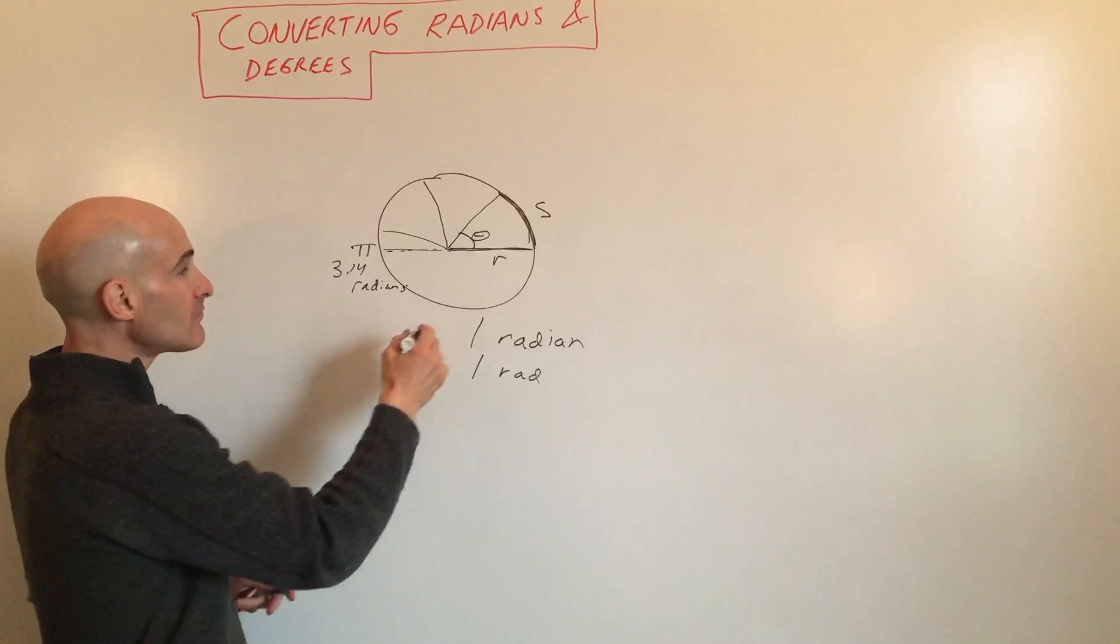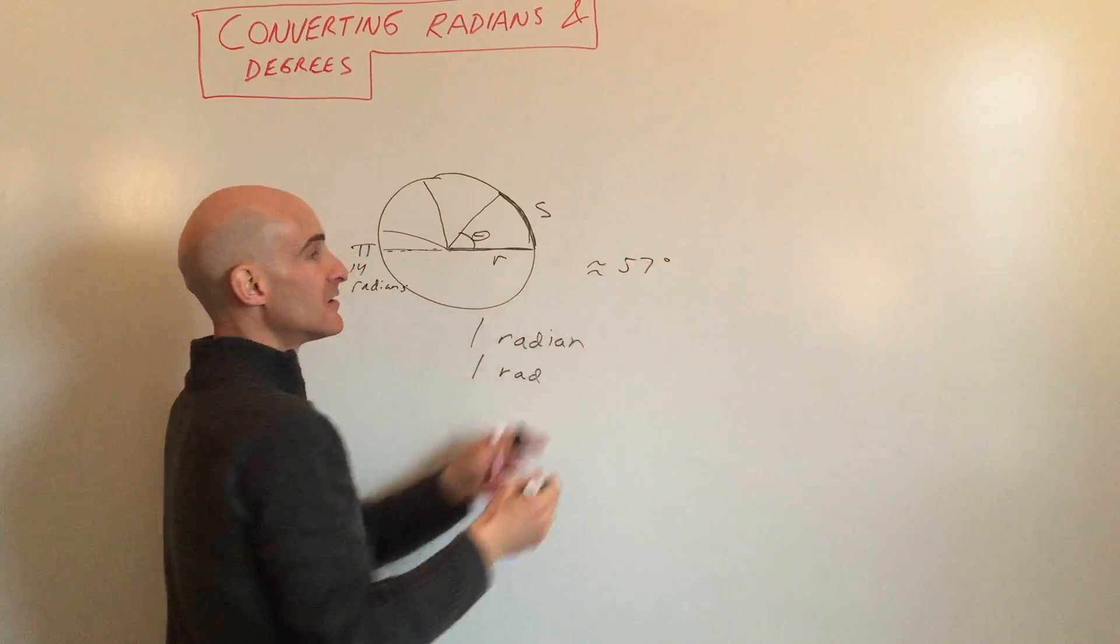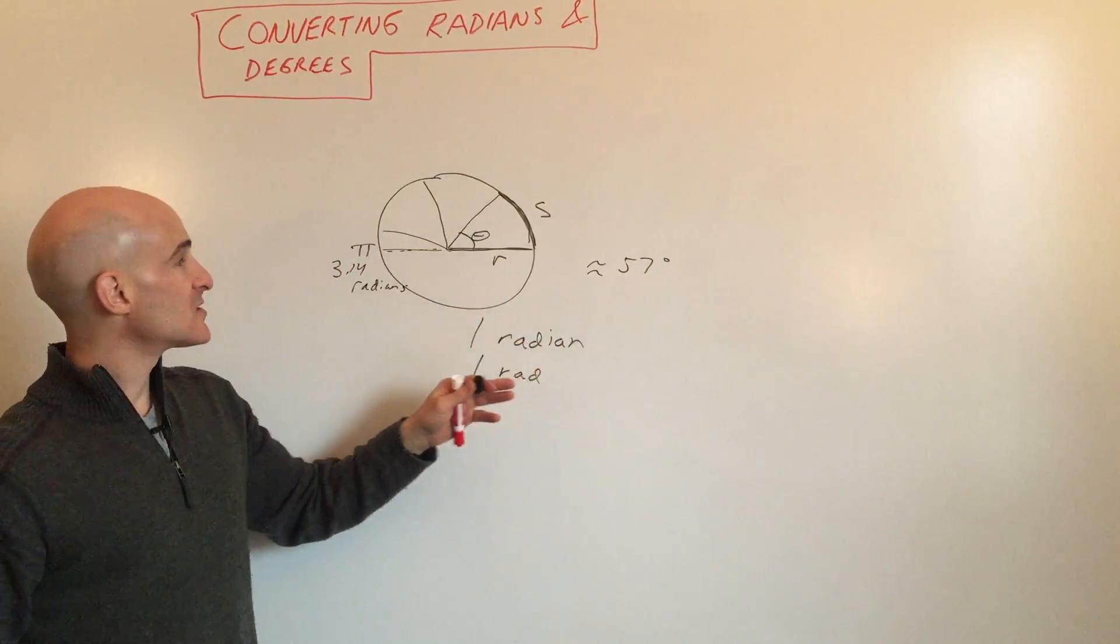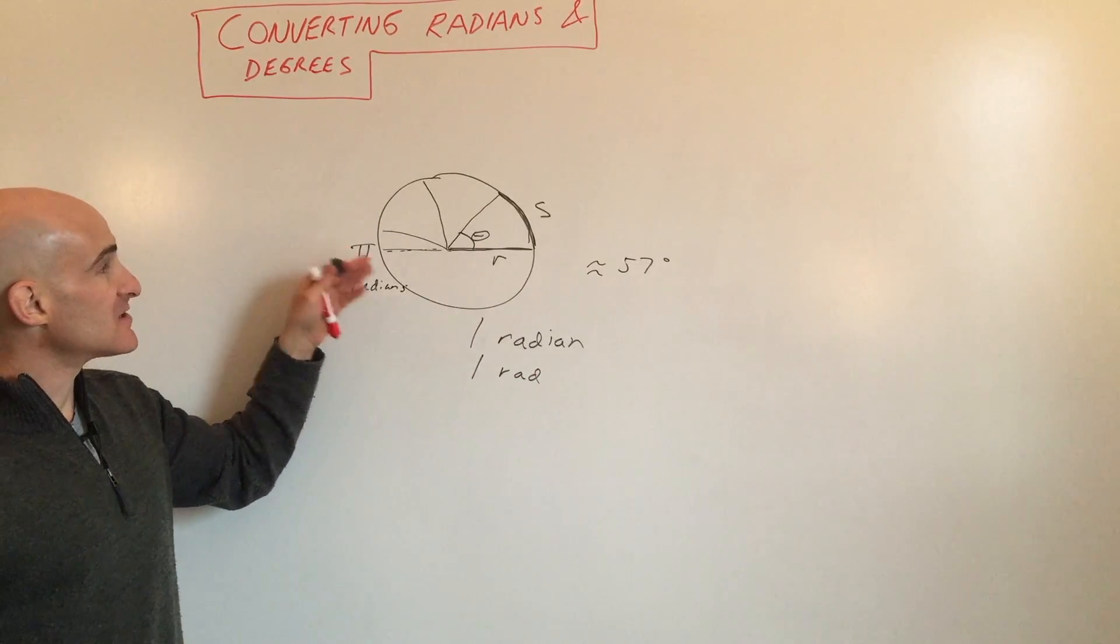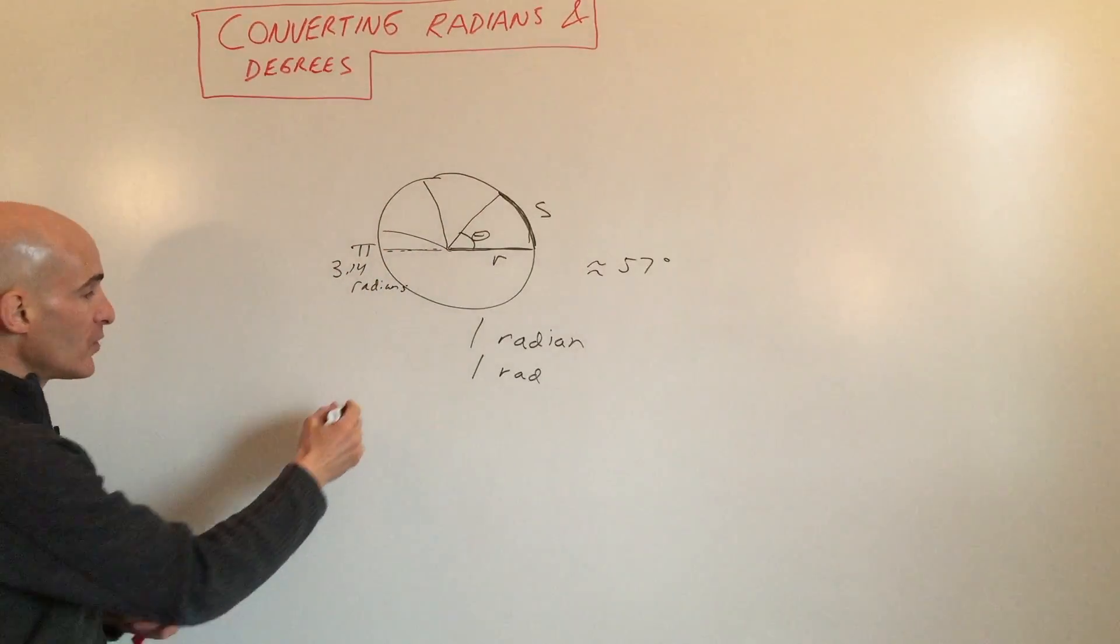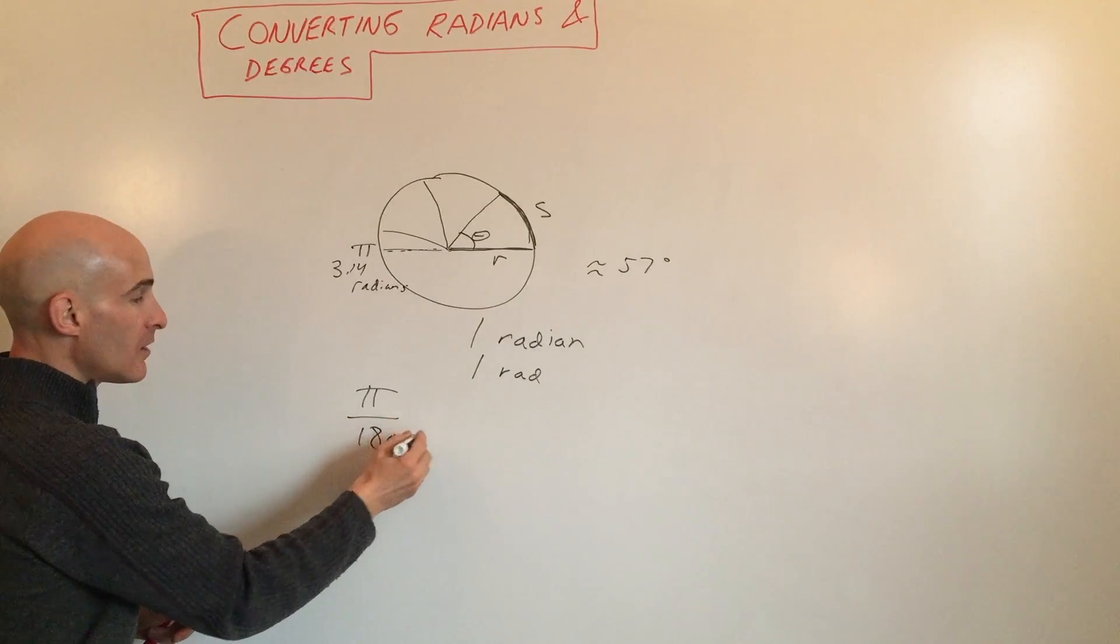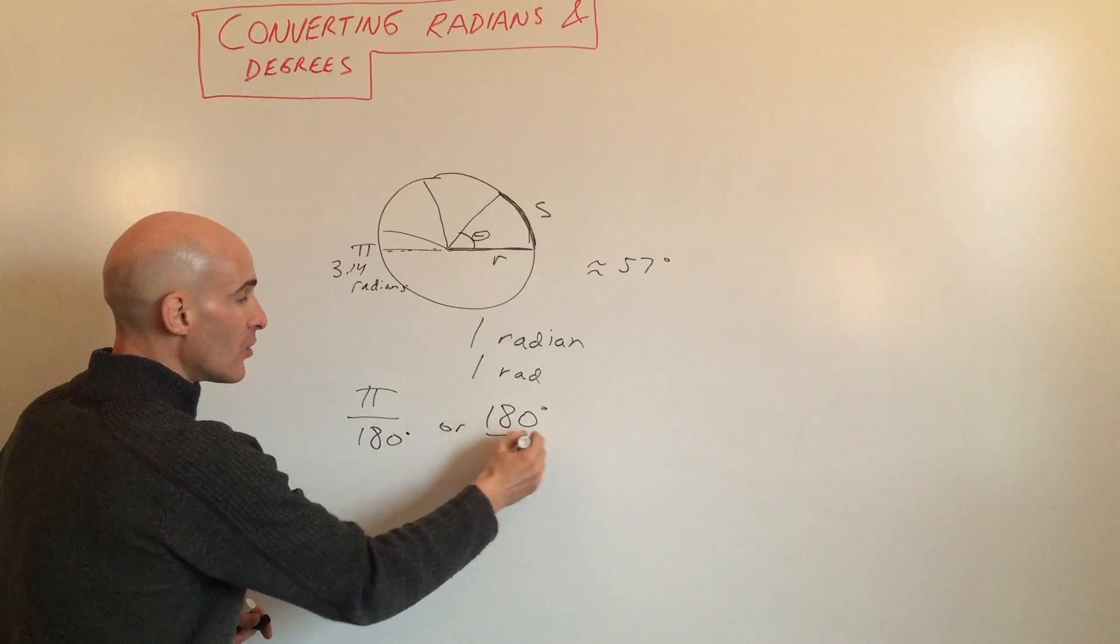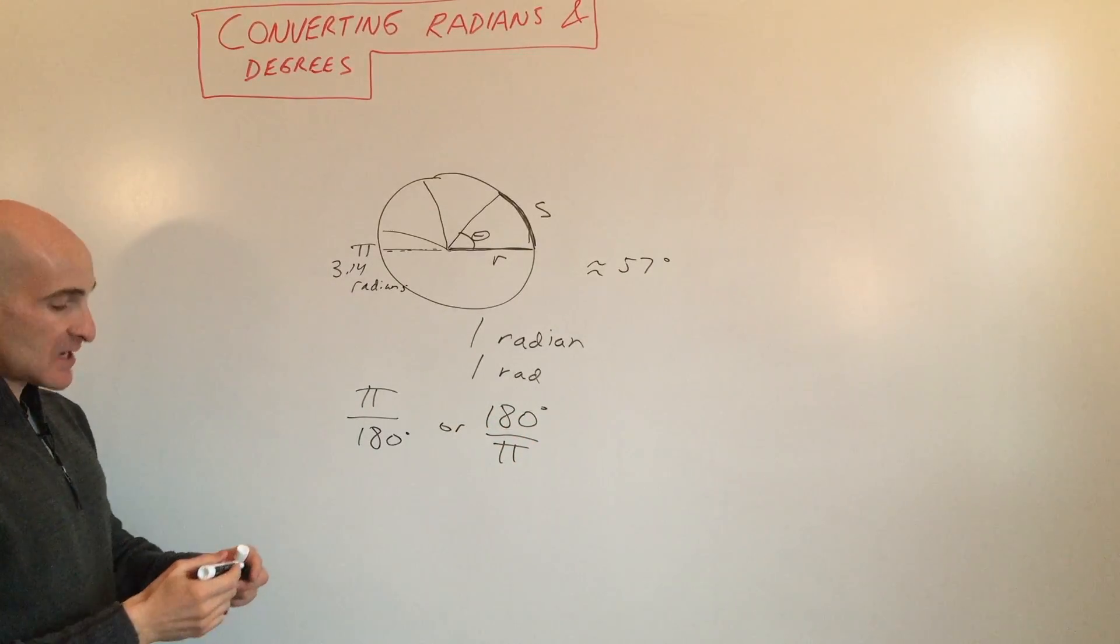So π radians, which is the same thing as 180 degrees, is 3.14 radians. A radian is approximately 57 degrees. The way that we convert from radians to degrees is we use this conversion factor: π radians equals 180 degrees, so we can use π/180 or 180 degrees/π.